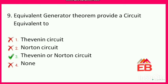Next: the Equivalent Generator theorem provides a circuit equivalent to? Options are Thevenin circuit, Norton circuit, Thevenin or Norton, or none. When we apply the Equivalent Generator theorem, it results in either a Thevenin network — a voltage source in series with a resistance — or a Norton circuit — a current source in parallel with a resistance. So option 3, Thevenin or Norton circuit, is correct.